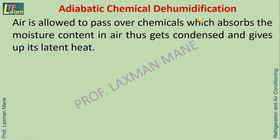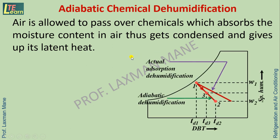Adiabatic chemical dehumidification: in this process, air is allowed to pass over chemicals which absorb the moisture content in the air. Thus the air is dehumidified and gives up its latent heat. This adiabatic chemical dehumidification process is shown on the psychrometric chart. The ideal adiabatic dehumidification follows path 1–3–2, while the actual adsorption dehumidification follows the line shown, where process 1–2 is the actual process.